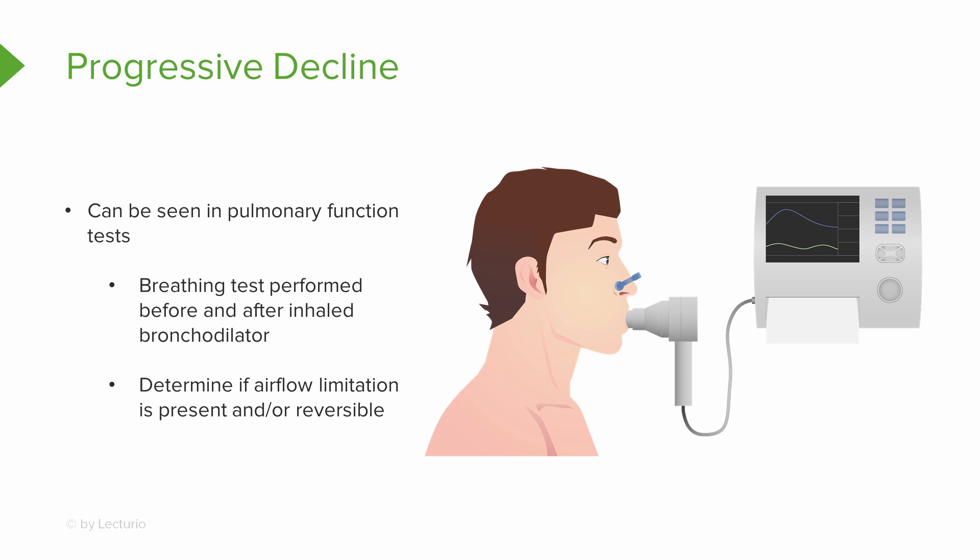Remember, that's a criteria we talked about earlier. We're looking at pulmonary function tests — you do them first, then you give the patient an inhaled bronchodilator, then you measure again. That'll help us know if the airflow limitation is present and if it's partially or fully reversible with a bronchodilator.